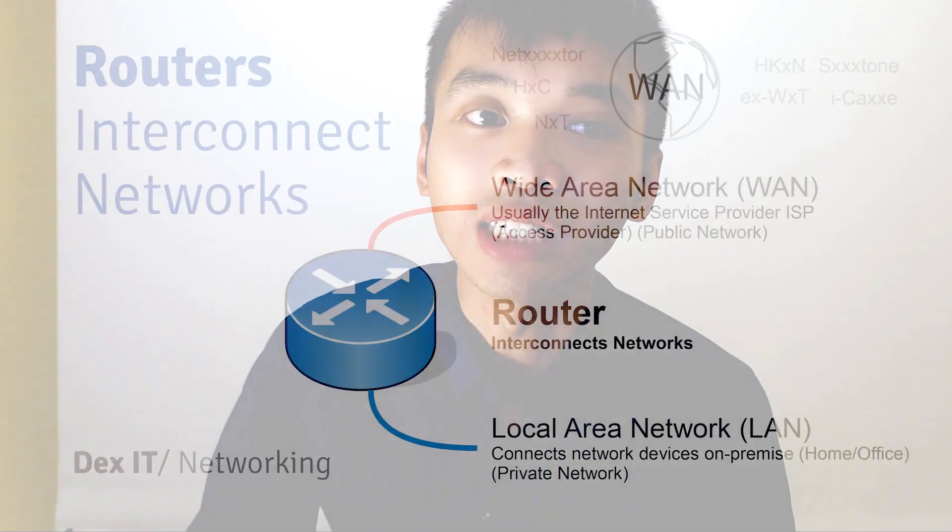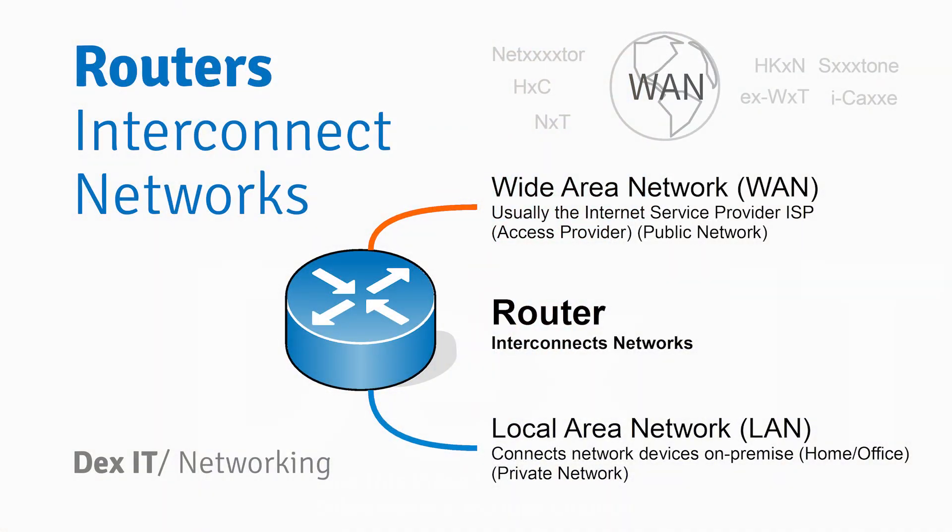Hey guys, welcome to my channel. Today I want to talk about some of the network infrastructure — specifically routers, switches, and access points. Number one, let's look at routers. Routers are a kind of device to connect different networks.